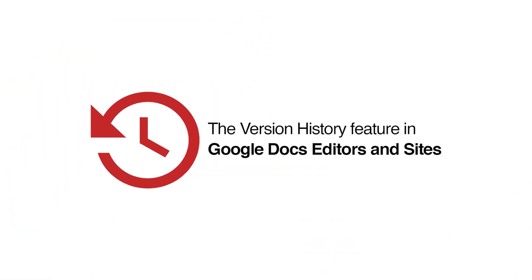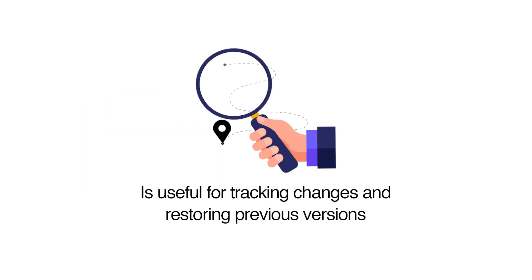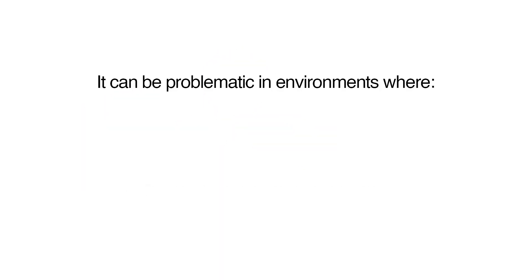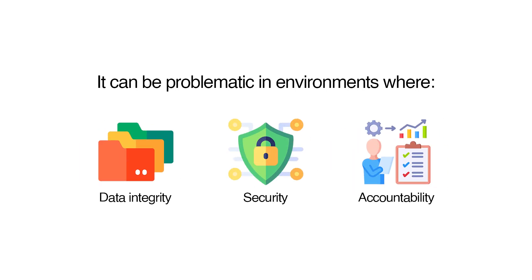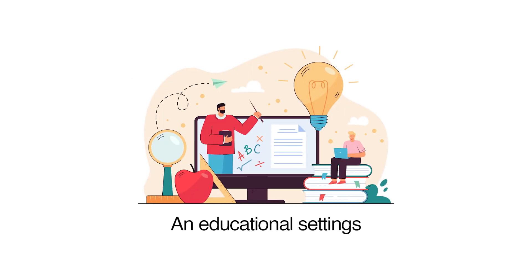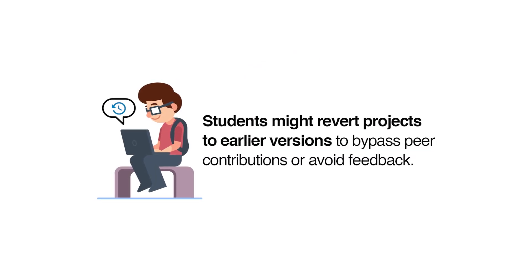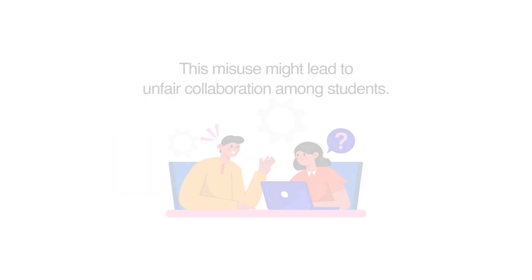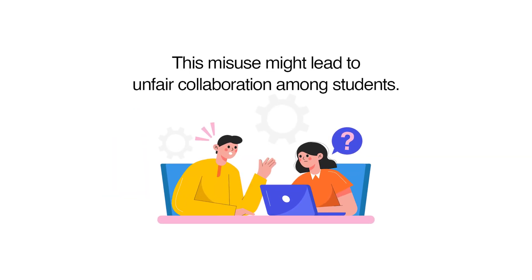The version history feature in Google Docs editors and sites is useful for tracking changes and restoring previous versions, but it can be problematic in environments where data integrity, security, and accountability are crucial. In educational settings, students might revert projects to earlier versions to bypass peer contributions or avoid feedback, which might lead to unfair collaboration among students.